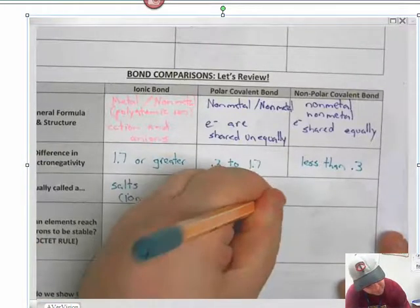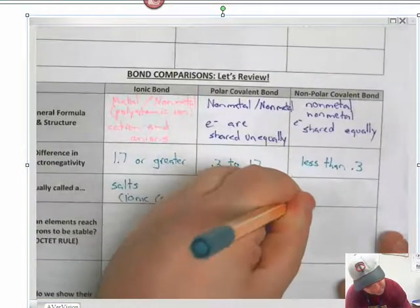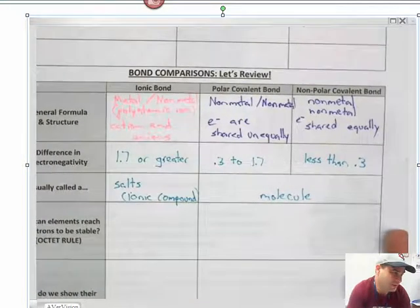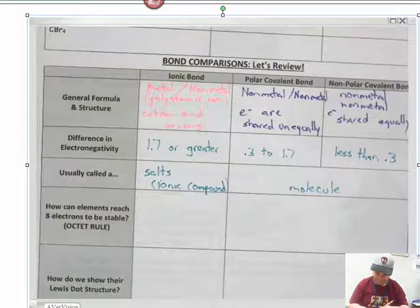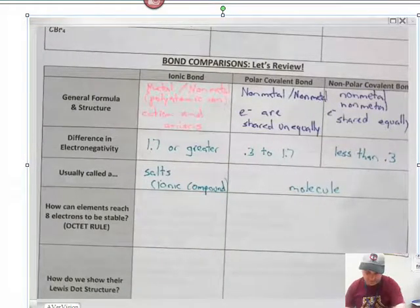These are referred to as molecules. Because when you use the term molecule, that is covalent bonding.